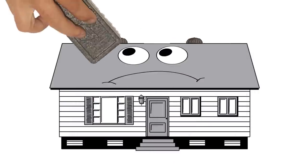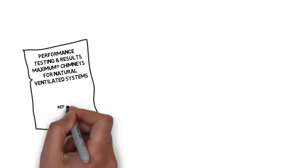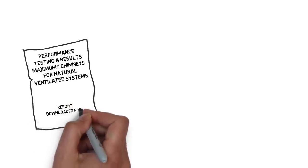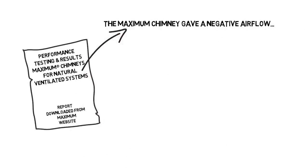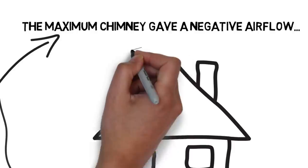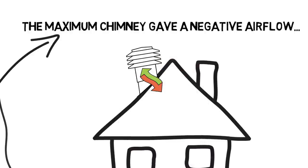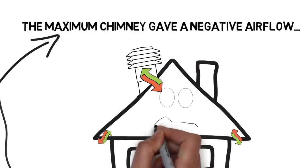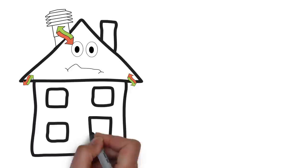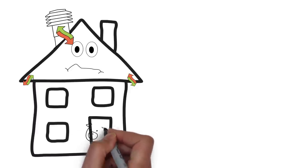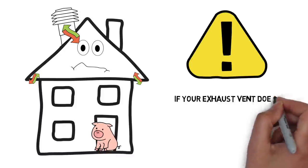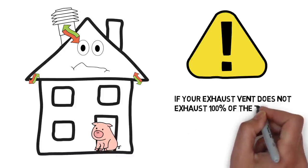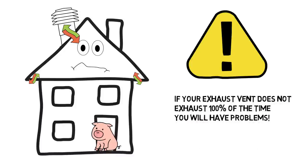Something else to consider. The Maximum vent in its own published report states that it lets airflow backwards into the building. This means that your exhaust vent is now an intake vent and short circuits your whole ventilation system. Of course, the report also states this was tested over a piggery housing with some 96 grower hogs. If an exhaust vent does not exhaust 100% of the time, you will have problems.